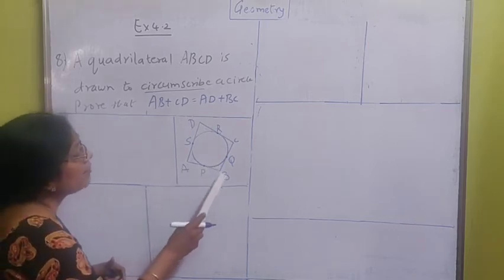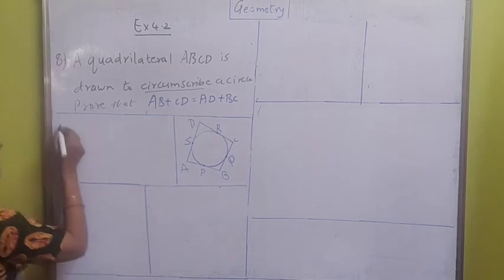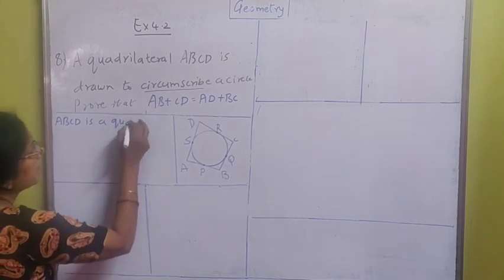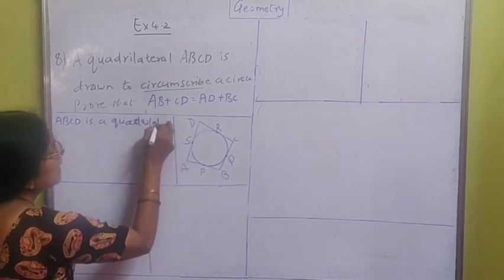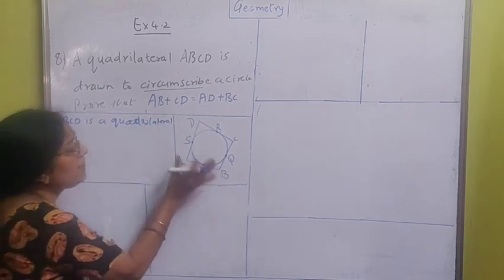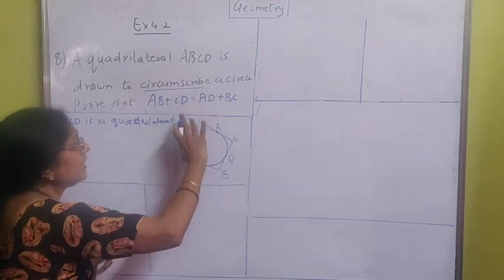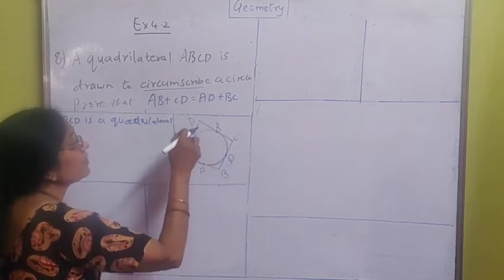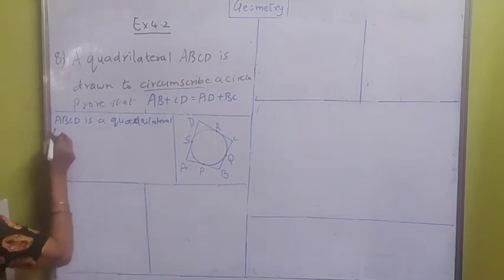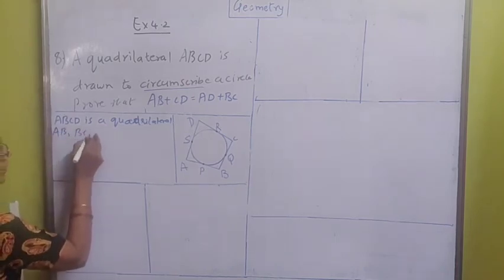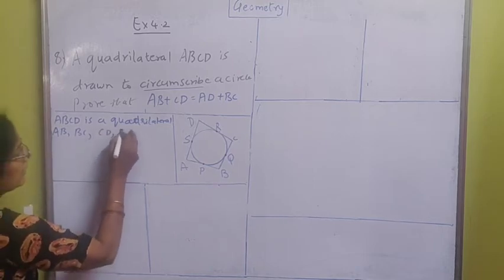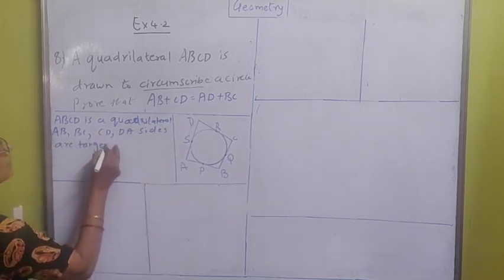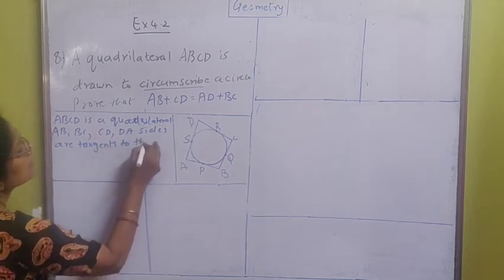Now you can see here ABCD is a quadrilateral. AB, BC, CD and DA are its sides. AB is a tangent to the circle, BC is a tangent to the circle, CD is a tangent to the circle, and DA is a tangent to the circle. So sides AB, BC, CD, DA are tangents to the circle at points P, Q, R and S respectively.